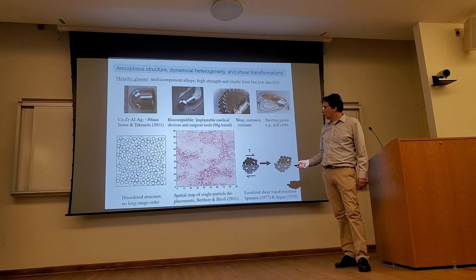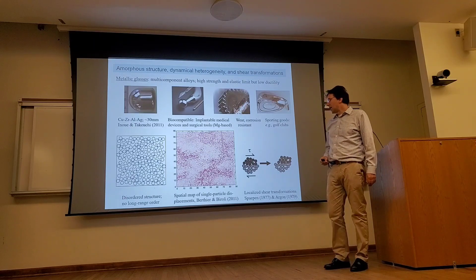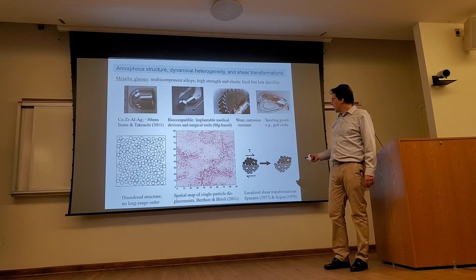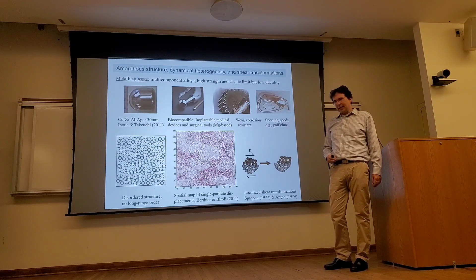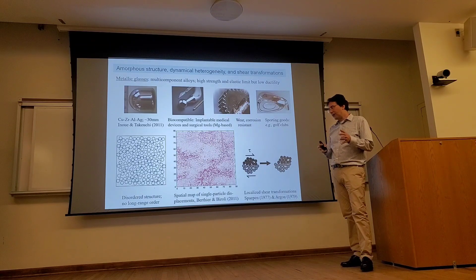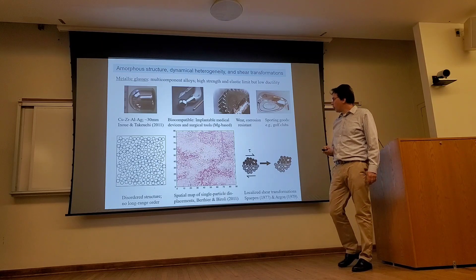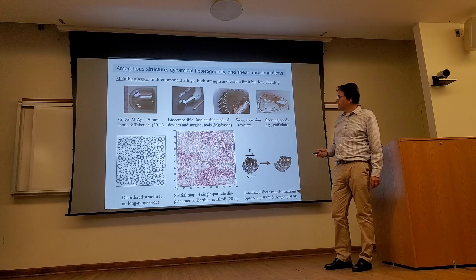When looking at this system at the atomic level, you can realize that there is a disordered structure with no long-range order, and this gives rise to a number of interesting phenomena. One of them is the so-called dynamical heterogeneity near the glass transition. It was realized a number of years ago that the elementary plastic event in such a disordered system usually consists of collective rearrangements of small clusters of atoms.